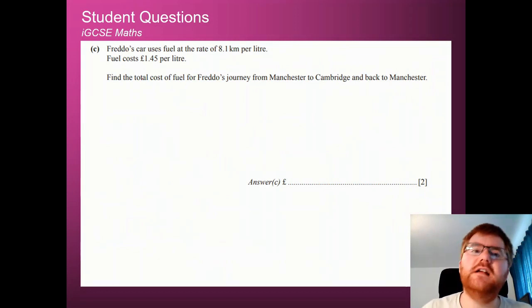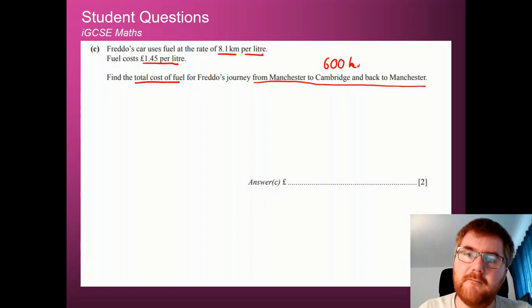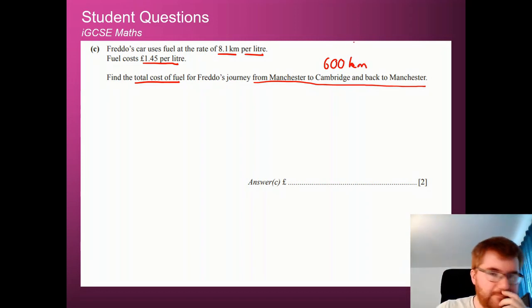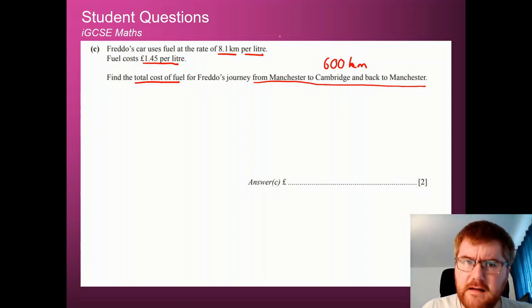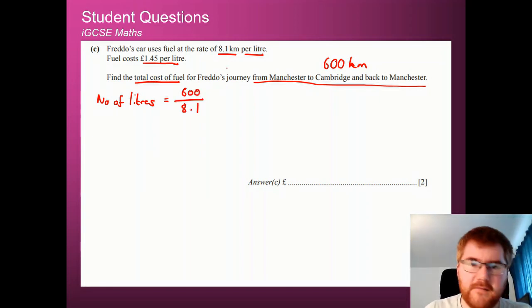Now, for part C, this is a little bit different, this question. So Freddo's car uses fuel at the rate of 8.1 km per litre. Fuel costs £1.45 per litre. I think at the moment it's going to cost a little bit more. And then find the total cost of fuel going from Manchester, Cambridge and back. So remember, it was 300 kilometres to go from Manchester to Cambridge. To go back is also 300 kilometres. So we want to work it out for 600 kilometres. Now, the way that we do this, we're going to work out how many litres are needed. So to work out the number of litres of petrol, we're going to take the 600 and then divide it by how many per litre, 8.1. And once we've got that answer, so I'm going to leave that there to work out the total cost.